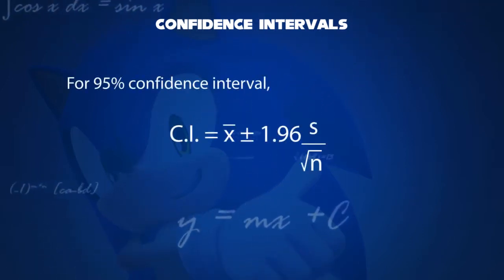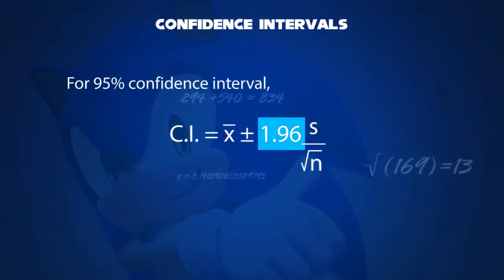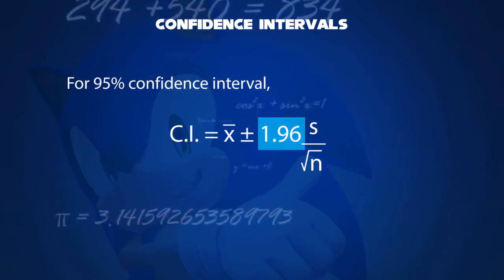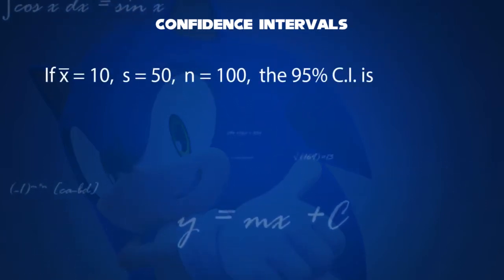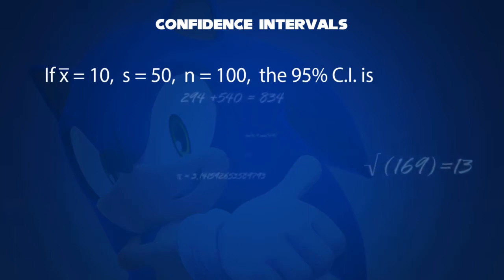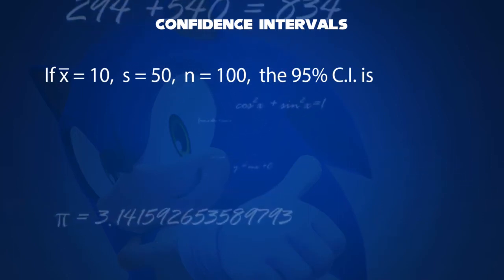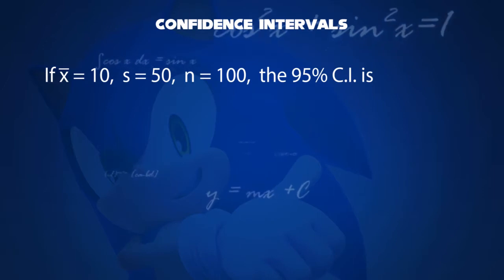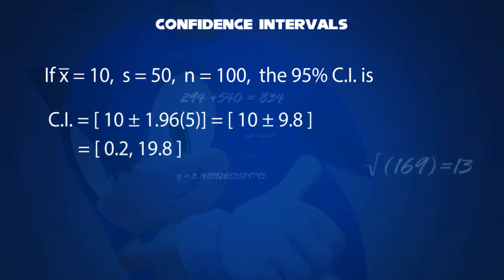For a 95% confidence interval, the value of z is 1.96. For example, if the sample mean is 10, the sample standard deviation 50, and sample size 100, the confidence interval is obtained as 0.2 and 19.8.